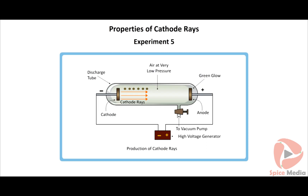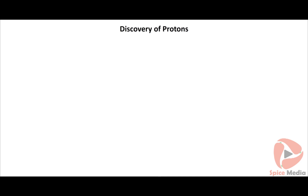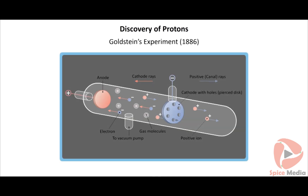Experiment 5: these experiments are repeated using different gases or different cathodes in the discharge tube with no change in properties. Conclusion: the nature of cathode rays does not depend on the nature of the gas inside the tube or the cathode used.